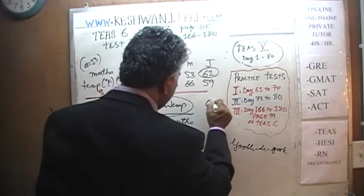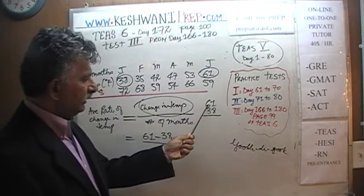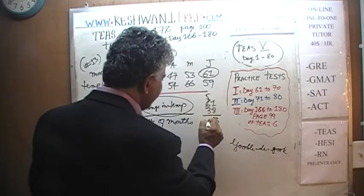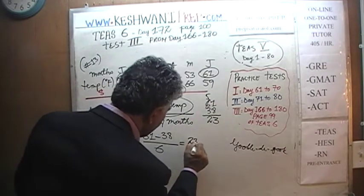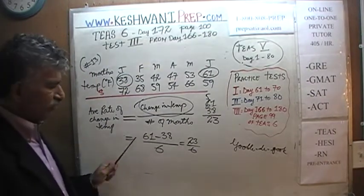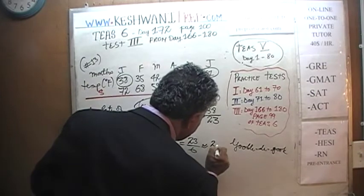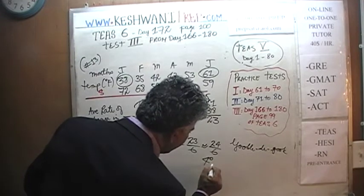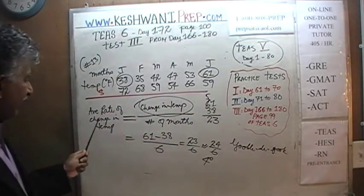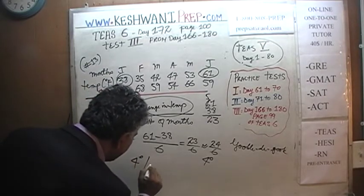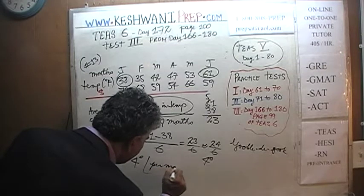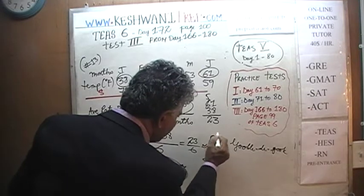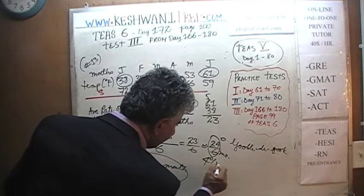61 minus 38: 11 minus 8 is 3, and 5 minus 3 is 2, so it is 23 over 6. 23 is not a multiple of 6, so let's estimate — pretend it is 24. 24 over 6 is 4 degrees. The unit is degrees per month. On top we have degrees, and here we have months.